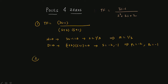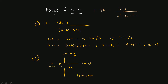Now we have to plot these values. On the x-axis we have the real part and on the y-axis the imaginary part. The zero at 1/3 is marked with a circle, and the poles at -1 and -2 are marked with crosses. This is the pole-zero plot you need to draw when you see this kind of question in your exam.